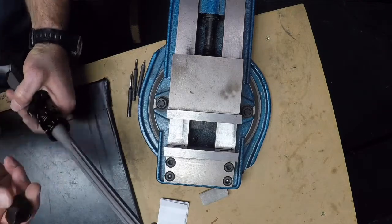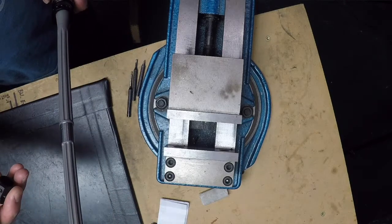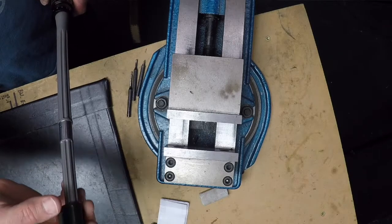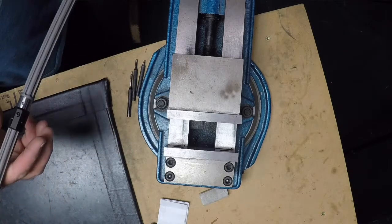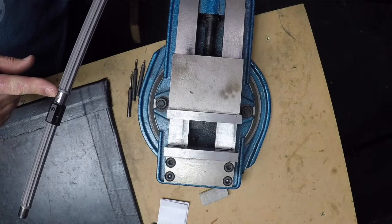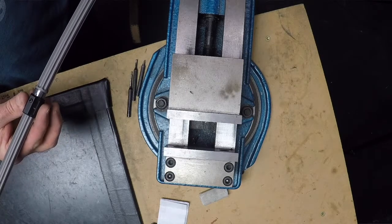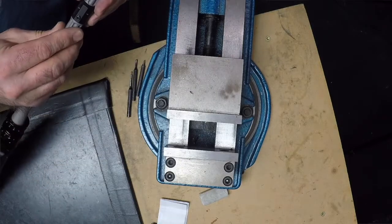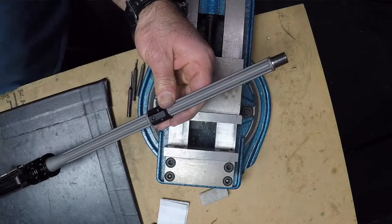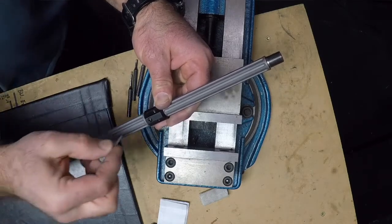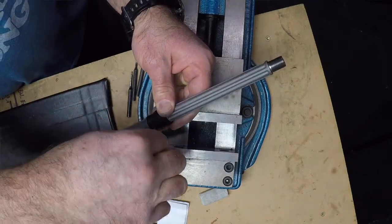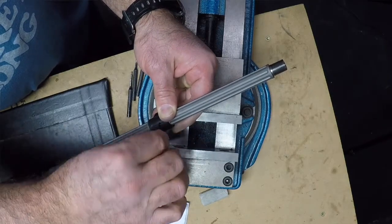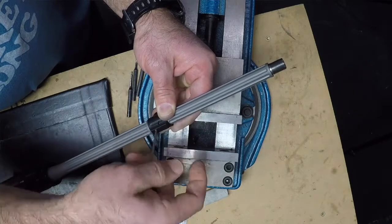Okay, so it's time to put the gas block back on. I have the set screw in there just a little bit. Pretty simple, straightforward. There is a divot in our barrel that corresponds to this set screw. I like to use a little bit of blue Loctite right here. So just put a little dab on there and tighten it up.